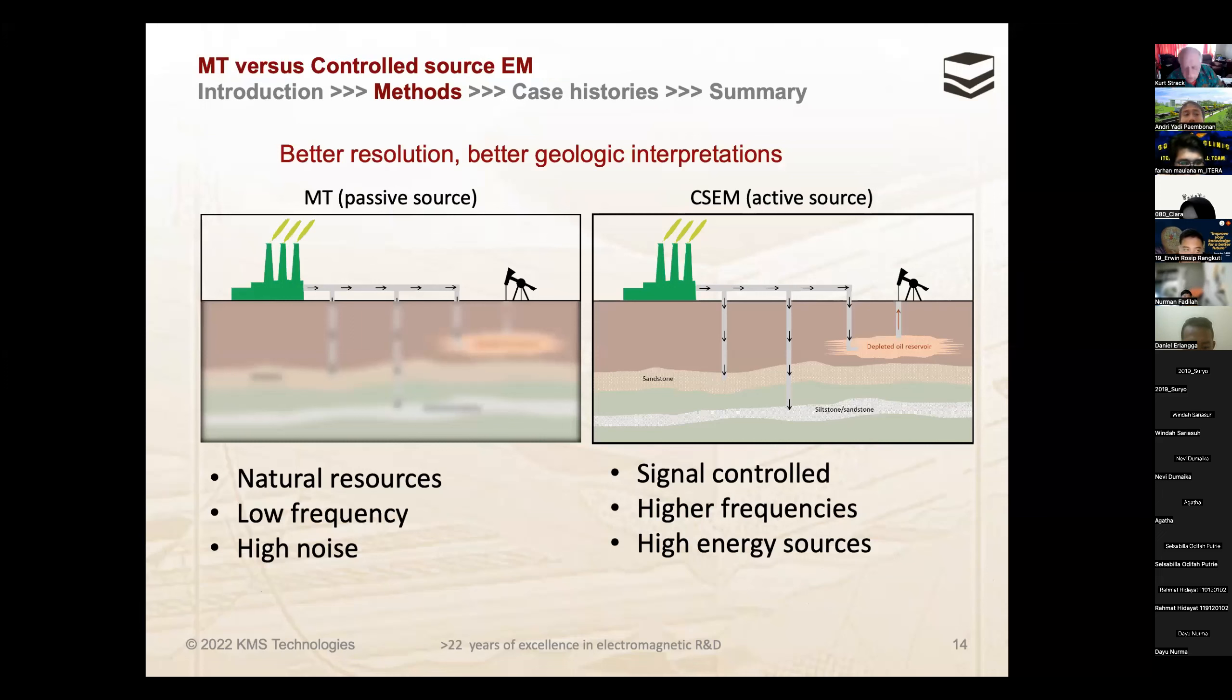This is the controlled source electromagnetic method, because now we are controlling the source. In magnetic tellurics, it's a passive electromagnetic method. The difference is that in the passive method, to see the resistivity of the subsurface, we get a fuzzy picture, but still we can see what's below. If you use controlled source electromagnetics, your picture gets a little bit more clear.